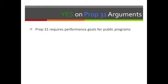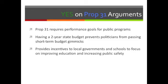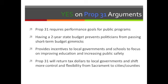Prop 31 imposes fiscal oversight on new government spending by requiring the government to demonstrate where any new spending or tax cuts will come from, lessening the temptation to overspend. It requires performance goals for public programs and mandates regular evaluations. A two-year state budget prevents politicians from passing short-term budget gimmicks and forces long-term fiscal thinking. It also provides incentives to local governments and schools to improve education and public safety, and will return tax dollars to local governments — shifting control from Sacramento to cities and counties.